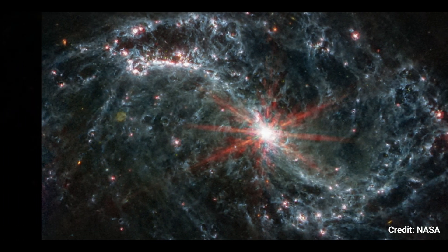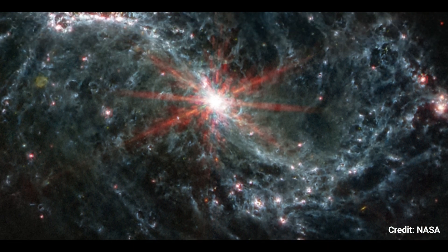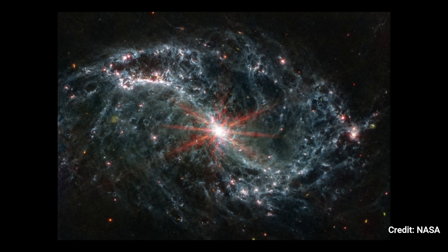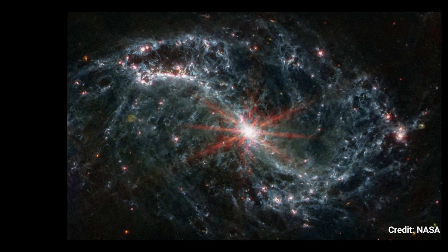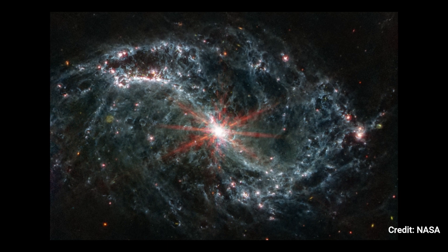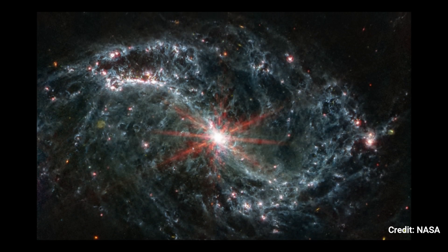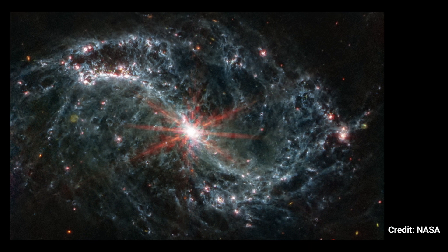Until Webb's exceptional resolution at infrared wavelengths, stars at the beginning of their lives in neighboring galaxies like NGC 7496 were hidden by gas and dust. Webb's unique wavelength coverage enables the identification of complex organic chemicals known as polycyclic aromatic hydrocarbons, which are important in the formation of stars and planets. In Webb's MIRI image, these are predominantly located within the spiral arms' primary dust lanes.